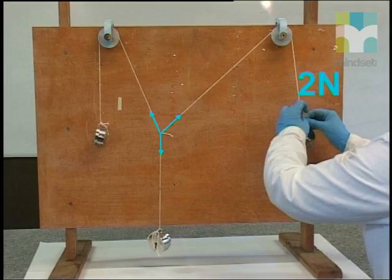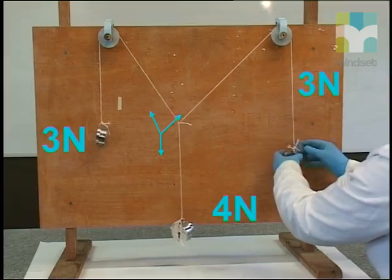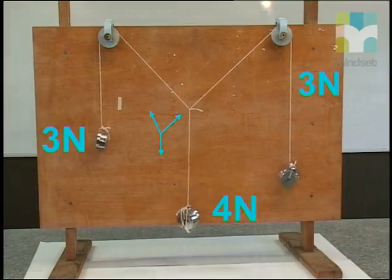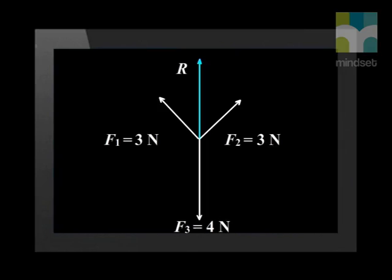Now let's think some more about the structure of three strings. Let's increase the weight on the right-side string to 3 Newtons. What would you see happen? You can see that the structure will not be in equilibrium if we add a weight here. But it can find a new equilibrium position. The question is, where will that position be?